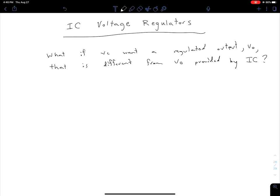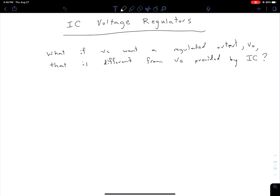If we find ourselves in that situation, we can make a circuit around this IC regulator that will accomplish the job. Let's say we have an IC regulator designed to output some regulated voltage Vreg. Remember this is a 3-terminal device.